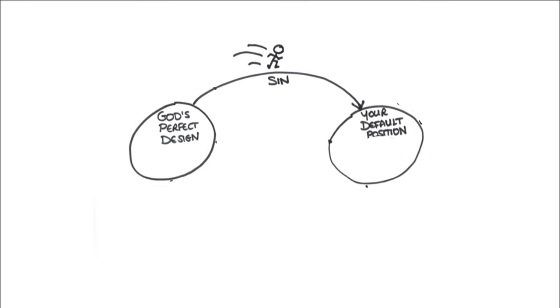It tells us that we are all like sheep who have gone astray, moving further and further away from God's perfect way every day of our lives.